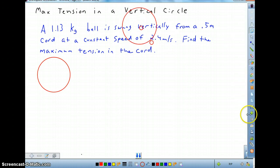Another example of a vertical circle problem, this time finding the max tension in an object swinging from a chord vertically.